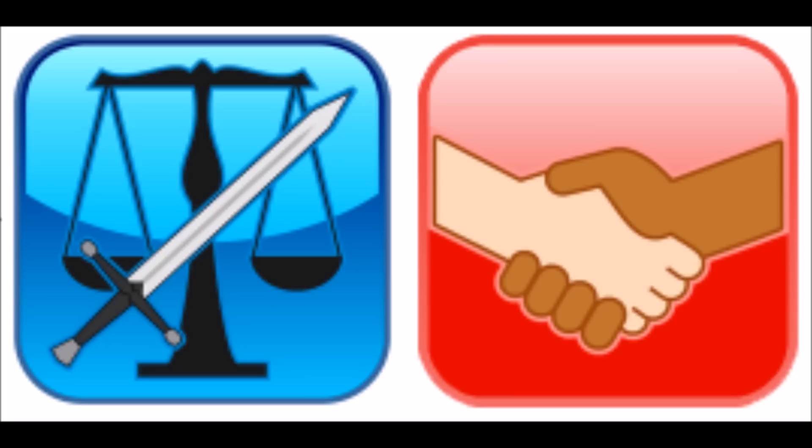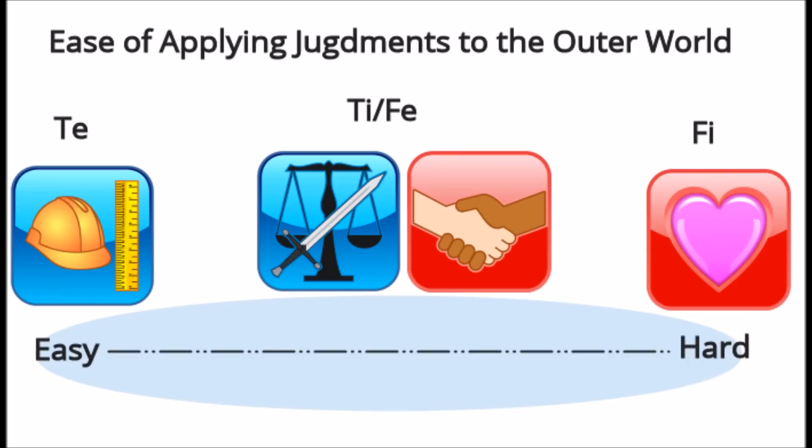FE-TI types are more likely to maintain that the same set of judgments must apply to all members of a given ideational category and could thus be said to strike a middle ground between the typical exterior judging attitude seen in TE and FI types. In this respect, we may say that the polarization between the ends of the TE-FI axis is actually much stronger than the polarization between FE and TI.